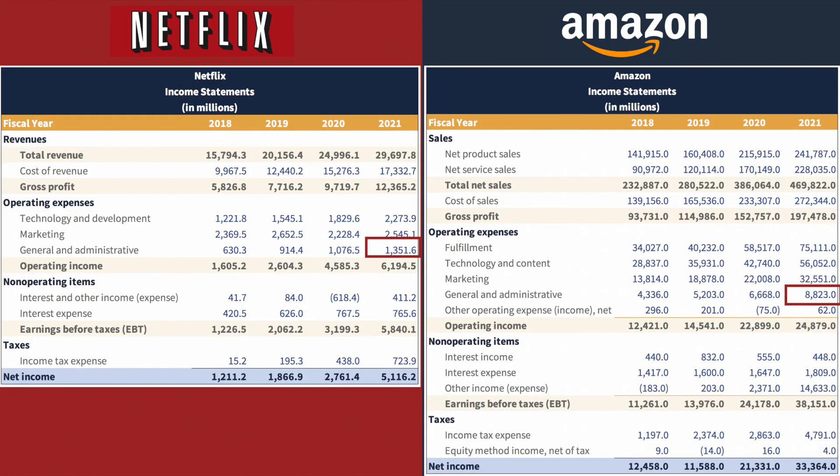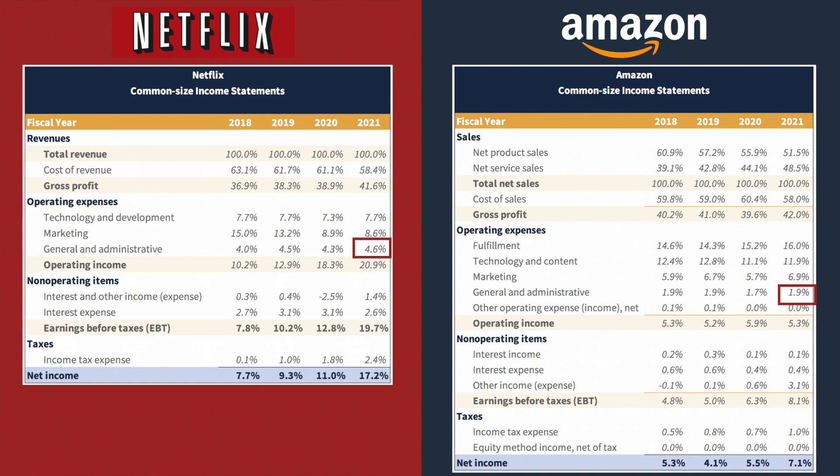We see the same pattern when it comes to general and administrative expense. Amazon spent a lot more than Netflix in terms of total dollar amount, but it spent less than Netflix as a percentage of sales. Thus, Amazon spends a lot less of every sales dollar on marketing, general, and administrative costs than Netflix does.